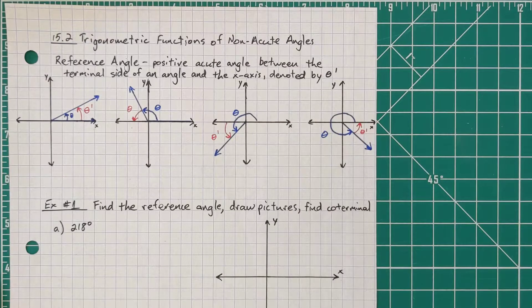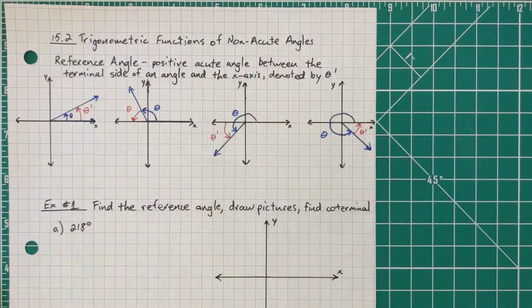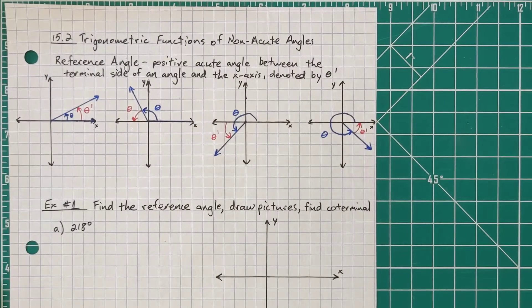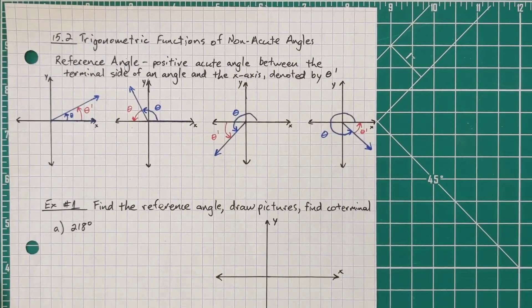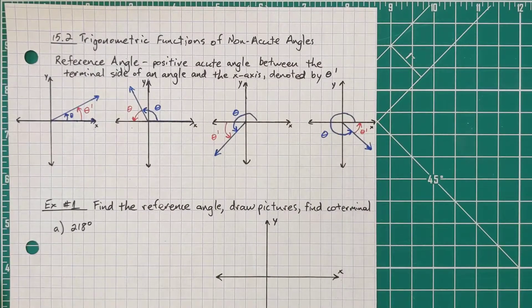All right, now let's jump into 15.2. We're talking about trigonometric functions of non-acute angles. So we only used acute angles in 15.1. It had to be between 0 and 90 degrees. If it was greater than 90 degrees, we didn't use it.